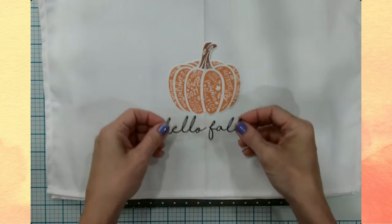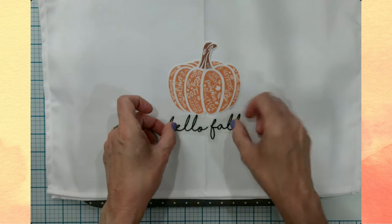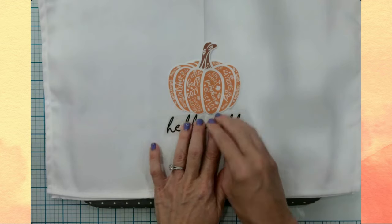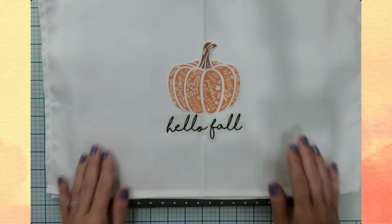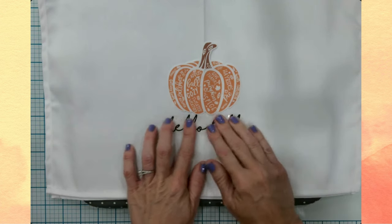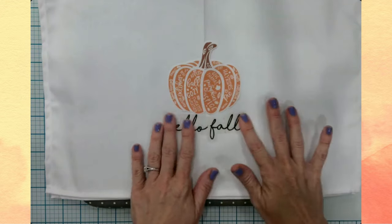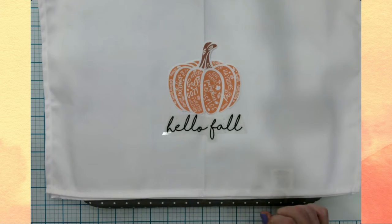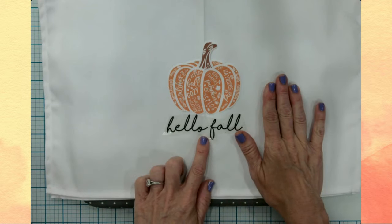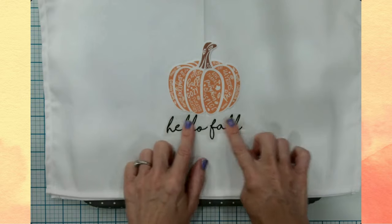So I think the pumpkin is in a really good place. And then I'm going to place the hello fall. And again, I'm putting that crease that I made right here on the crease. And now I'm just going to see if I like, is it even so to speak? Okay. I think that looks fantastic. So this is basically going, I lucked out because this is going to be 315 degrees for 30 seconds.